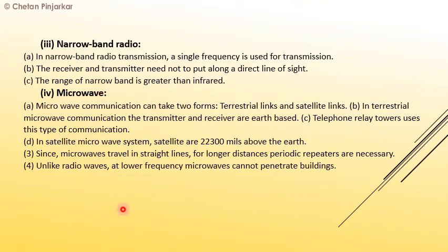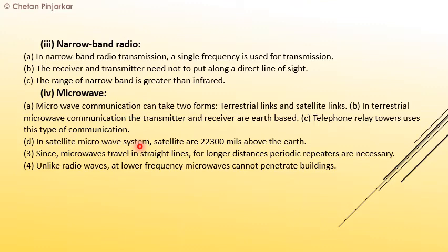Microwave communication can take two forms: terrestrial links and satellite links. In terrestrial microwave communication, the transmitter and receivers are earth-based. Telephone relay towers use this type of communication.